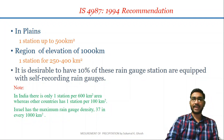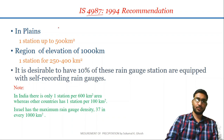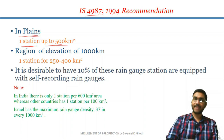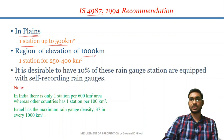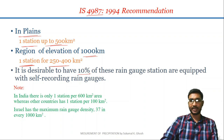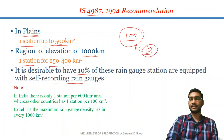Indian Standard 4987-1994 has given some recommendations for rain gauge density. According to IS 4987, in plain areas one station has to be there within 500 square kilometres. For regions with an elevation of 1000 metres, there should be one station for 250 to 400 square kilometres. It is also desirable that 10% of rain gauge stations are equipped with self-recording rain gauges — meaning out of 100 rain gauges, there should be a minimum of 10 recording type rain gauges.